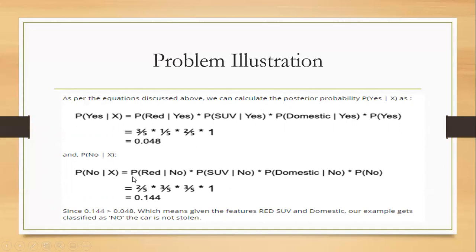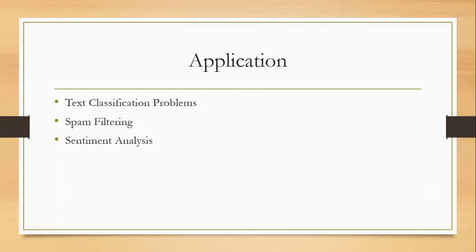So the probability of a car being not red, not SUV, and not domestic. And likewise, you can compute for the value, which is 0.0144. And now since 0.0144 is greater than 0.048, we have the classification, which is no. Right, since it has a higher value.